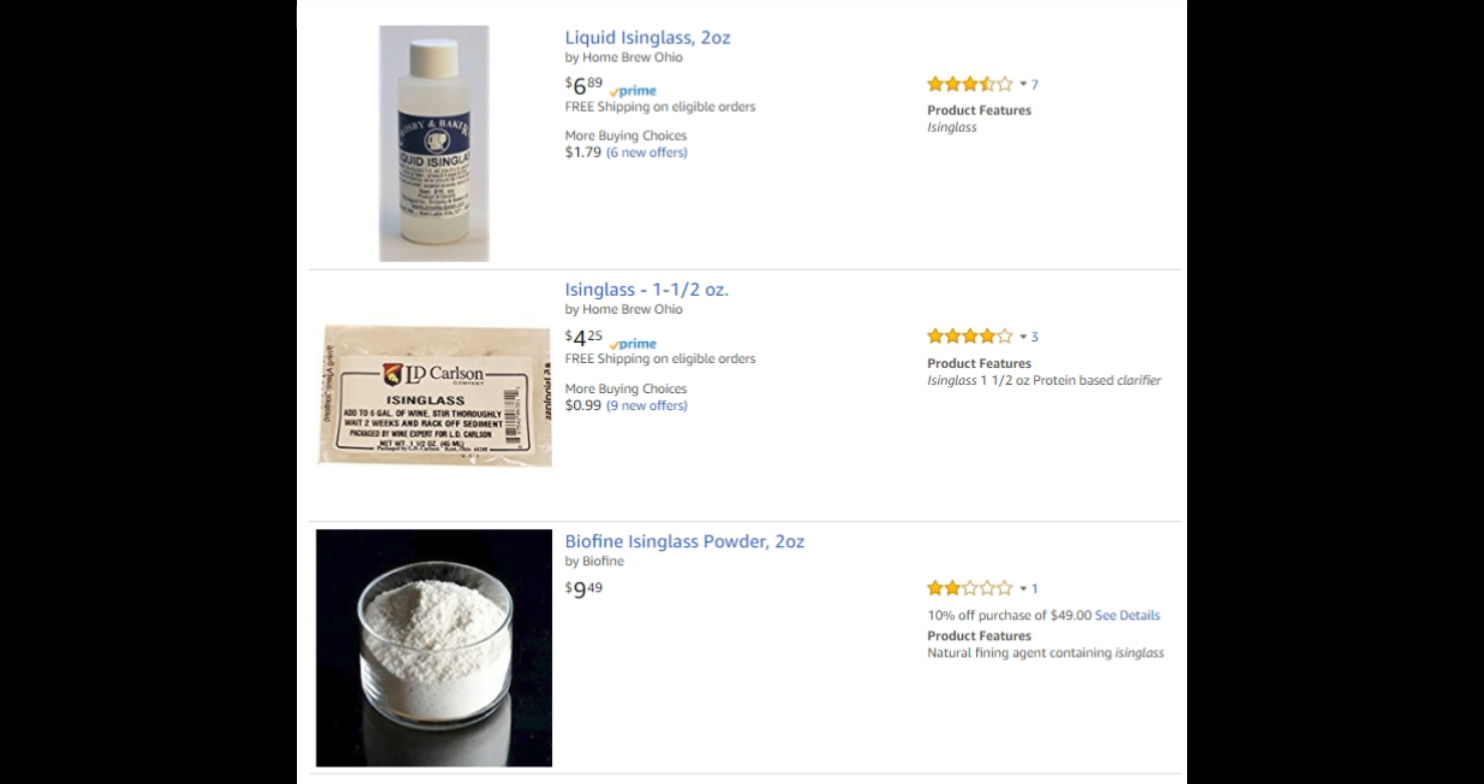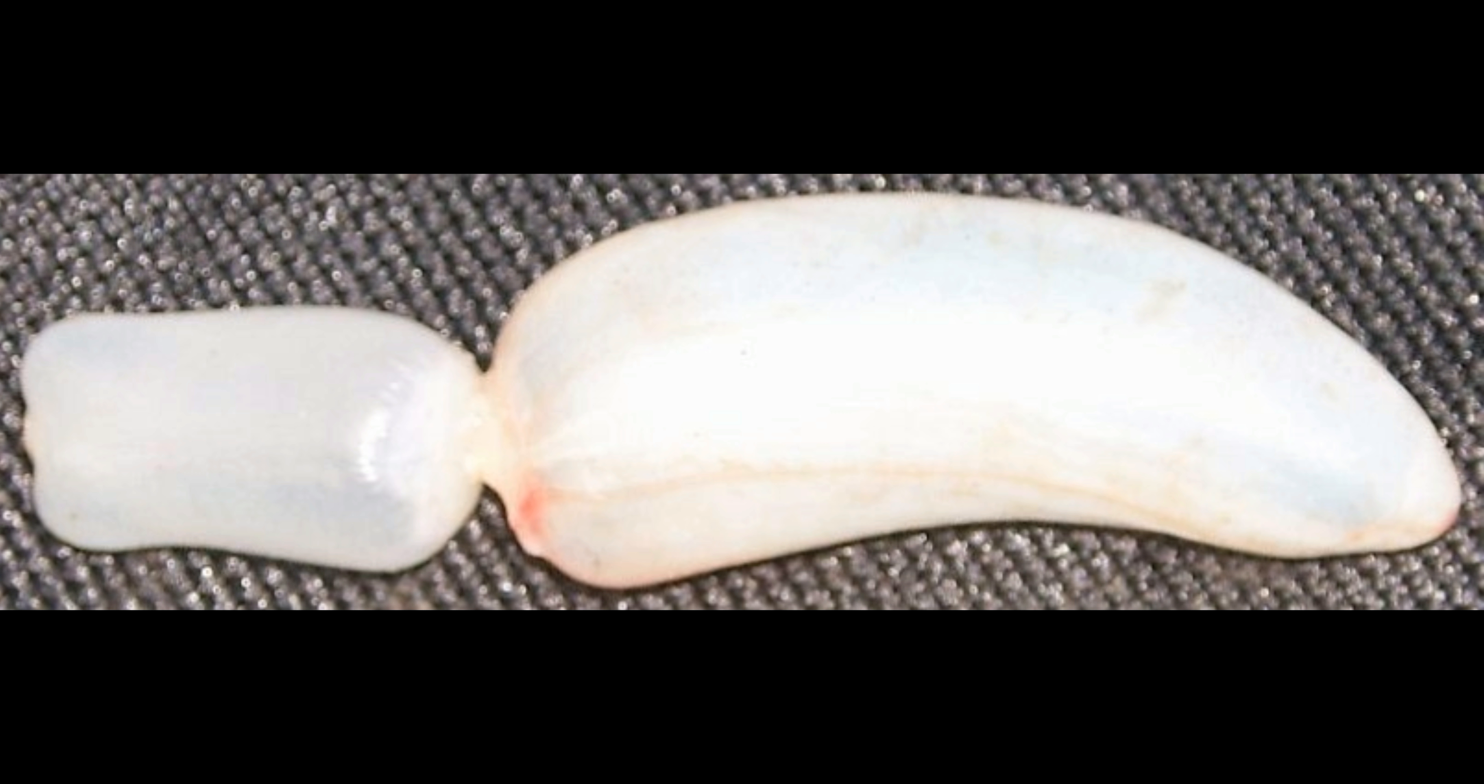Isinglass is a clearing agent for beer and other beverages. It is made from the dried swim bladders of fish, particularly derived from the Nile perch or cod, which are generally considered an invasive species. It is generally termed a fining or clarifying agent.